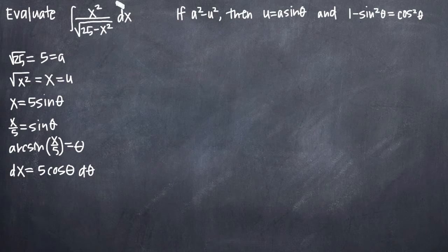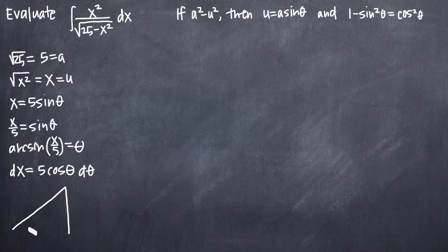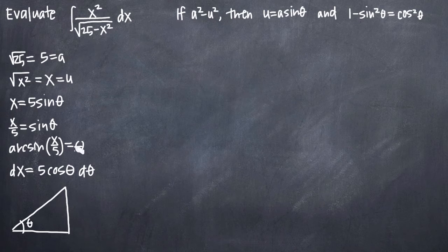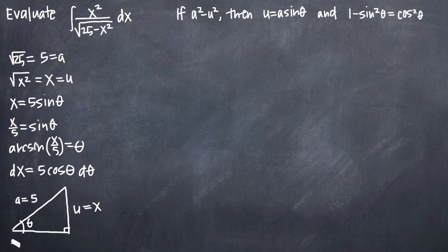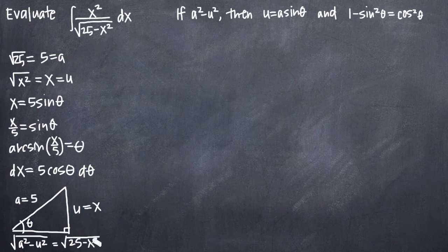We're going to be substituting for x and dx back into our function inside the integral. We also want to draw our right triangle for the sine substitution. Because we're using the substitution u equals a sine theta, we draw a right triangle identifying sine of theta equals x over 5. The hypotenuse is always equal to a, so a equals 5. The opposite side from the angle is always u, so u equals x. The adjacent side is always the square root of a squared minus u squared, which equals the square root of 25 minus x squared.